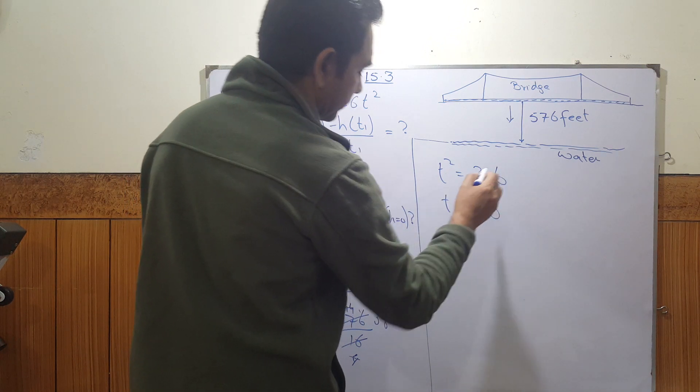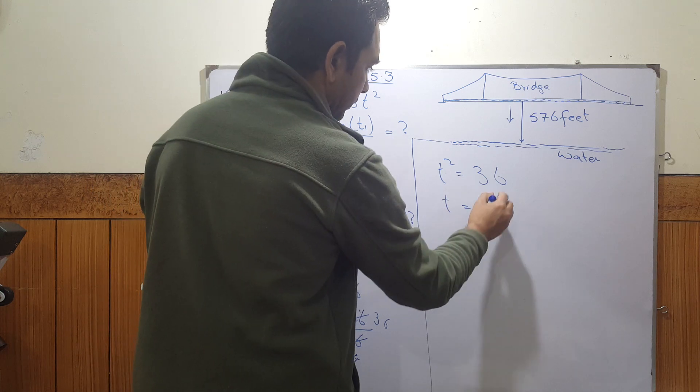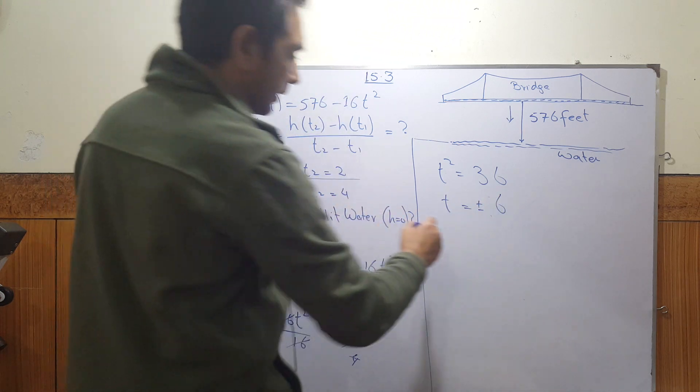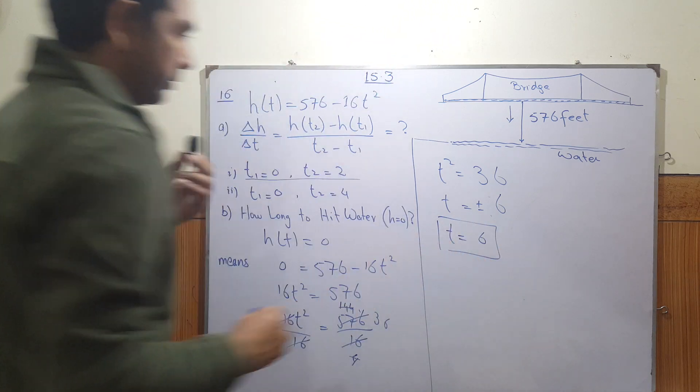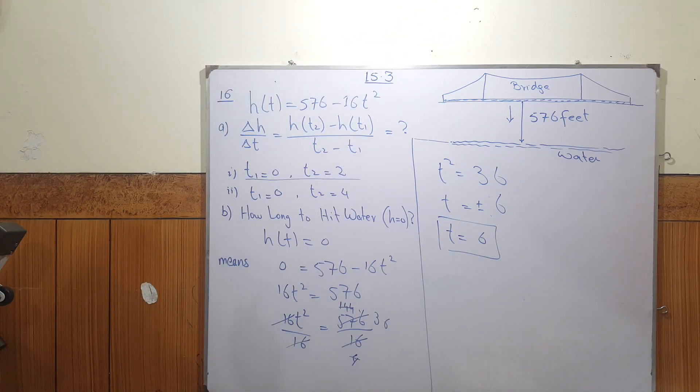T gives us plus or minus 6. So time cannot be negative, that's why we have the time is 6. So it takes 6 seconds from the bridge to hit the water.